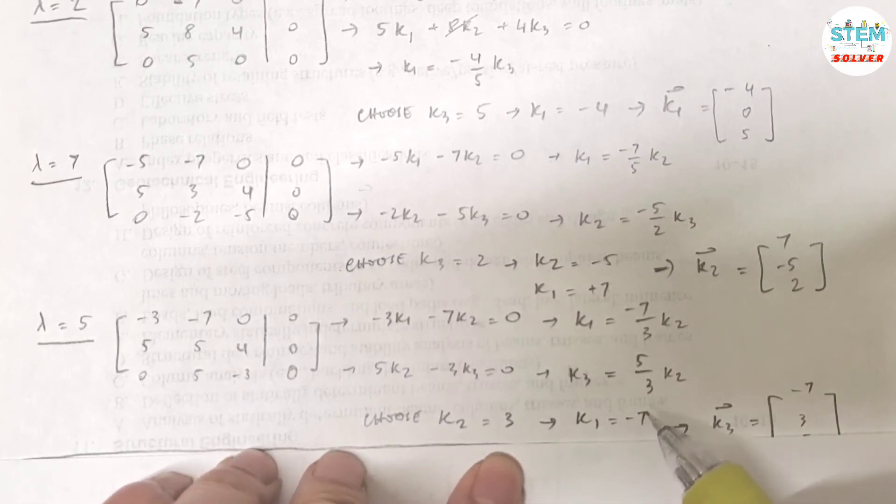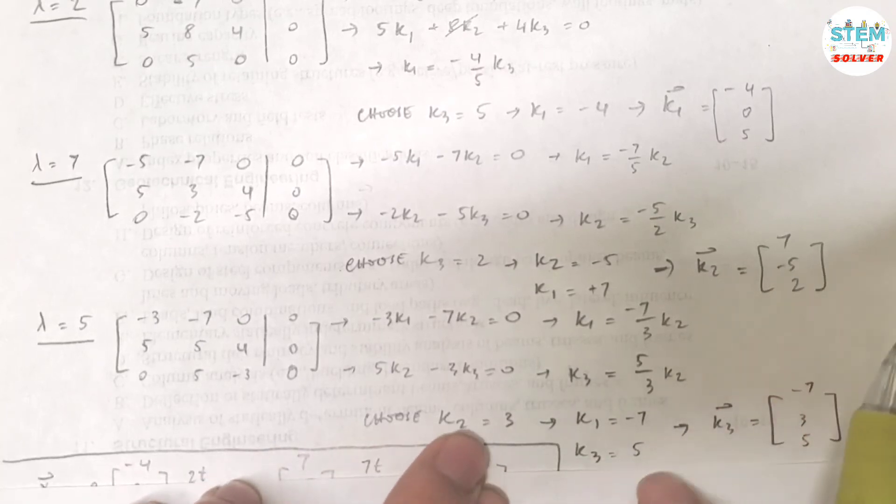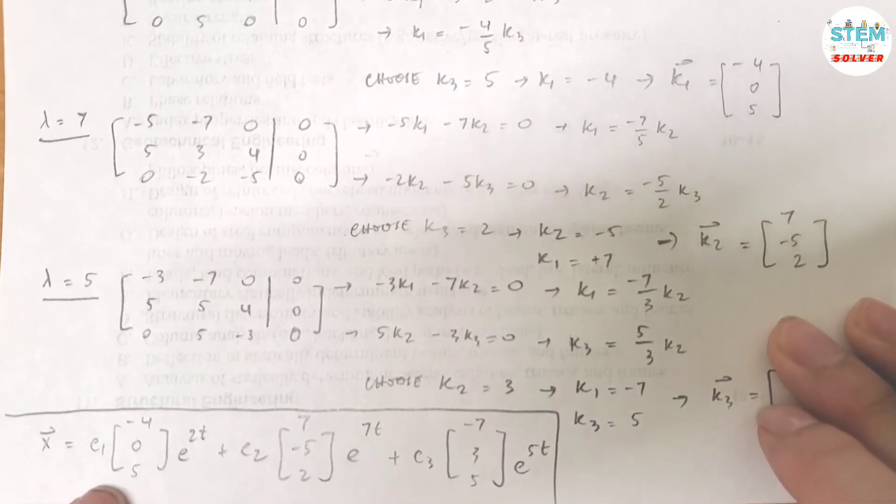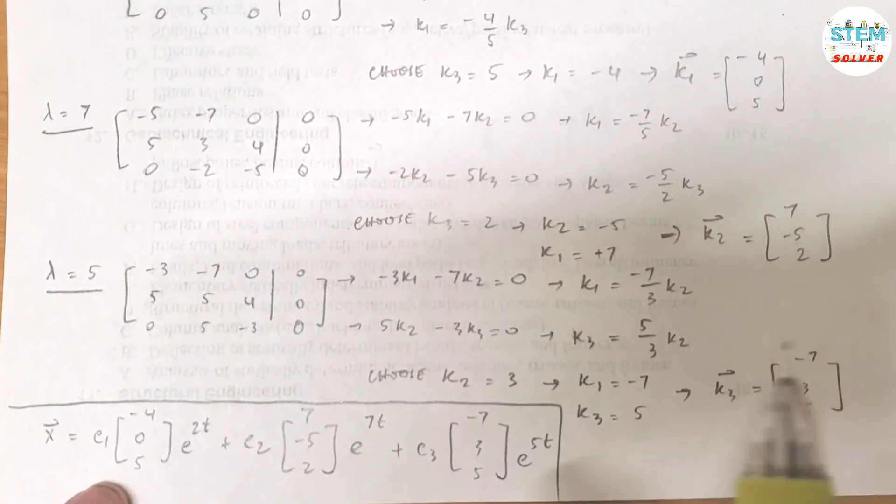All right, now choose k2 equals 3. That gives me k1 equals negative 7, k1 equals negative 7, k3 equals 5, because I chose k2 equals 3. Then my vector k3 is negative 7, 3, 5. All right.